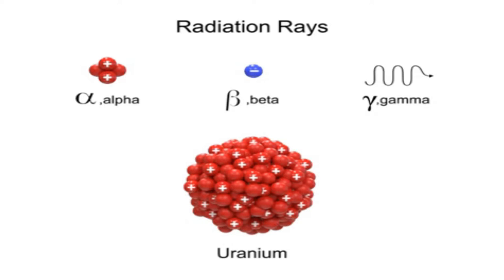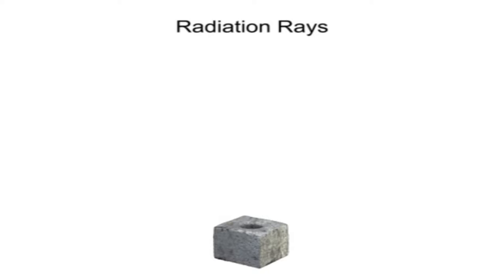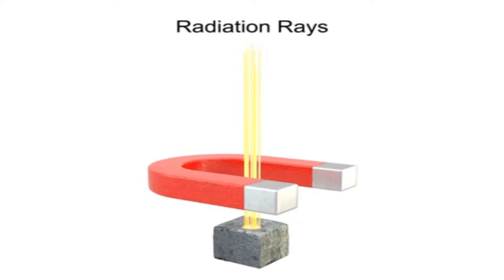Due to the distinct electrical charge characteristics of the alpha, beta, and gamma rays, they can be separated by directing a beam from a radioactive source through a magnetic field.